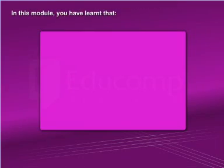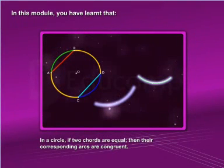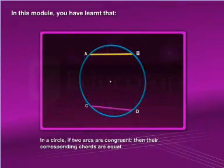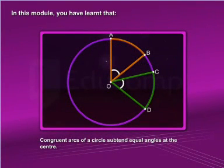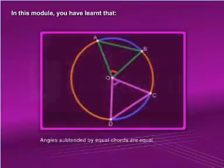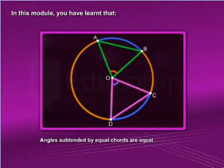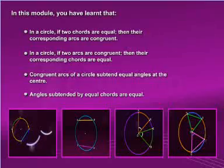In this module, you have learned that in a circle: if two chords are equal, then their corresponding arcs are congruent; if two arcs are congruent, then their corresponding chords are equal; congruent arcs of a circle subtend equal angles at the center; and angles subtended by equal chords are equal. Thank you.